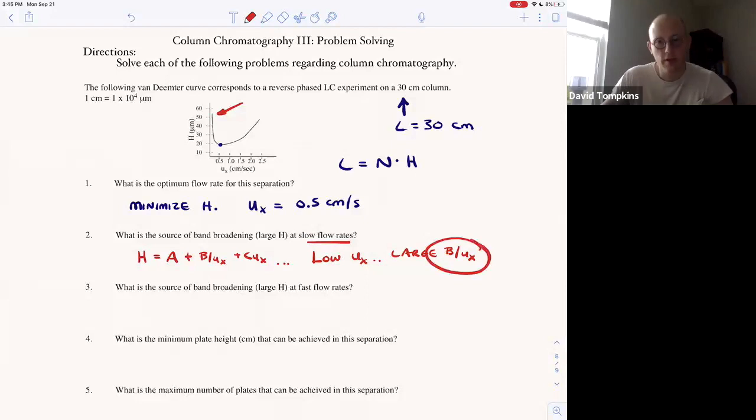The greatest contribution to causing the peaks to widen and decrease resolution at low flow rates is longitudinal diffusion.